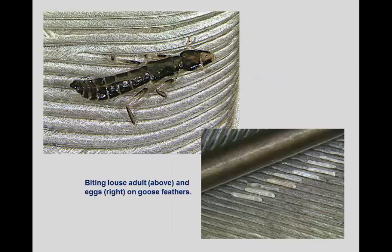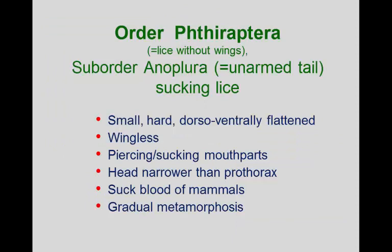Here's the goose louse — all those Canadian geese around here have a really big louse, a little bit over an eighth of an inch in length. You can see the elongated eggs glued to the bases of the feather shafts. The other suborder is the Anoplura — the sucking lice. These have modified mouthparts that can pierce the skin and take blood from their host animal. Again, dorsally-ventrally flattened and wingless. These only suck blood from mammals.